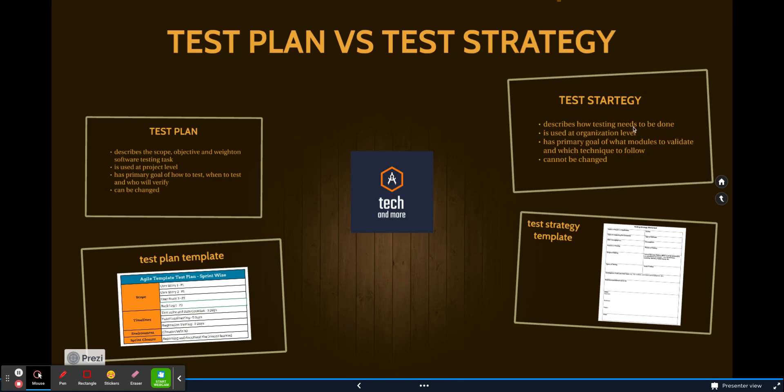Now test strategy is basically a document that talks about the QA parameters at the organization level. If you see the document here, it talks about the number of testers you'll require, the hardware devices that you'll require, who is the client, what is the project name, and all these things. And one more pointer that you can add, and it adds value to your answer, is that test strategy is a superset of test plan. A test strategy will always contain a test plan.